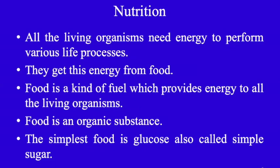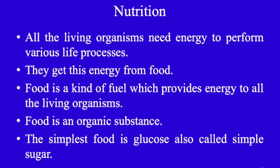Organic substances are mainly produced by living things and they all compulsorily contain carbon. The important organic compounds are carbohydrates, lipids, proteins, and nucleic acids. A more complex food is starch, which is made from glucose. The general name of substances like glucose and starch is carbohydrates.